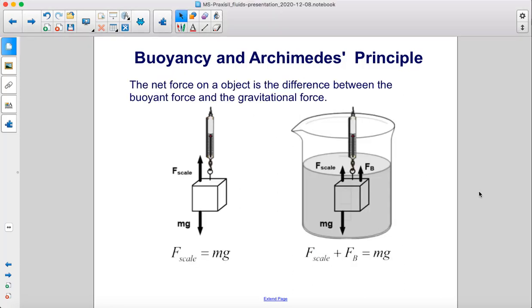The net force on an object is the difference between the buoyant force and the gravitational force. So here, the force of the scale equals mg. These are opposite and equal. And here, the force of the scale plus the buoyant force equals mg.